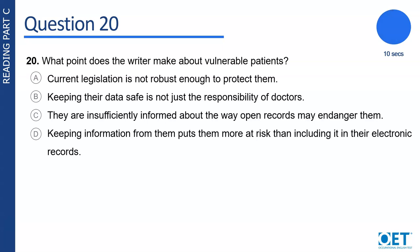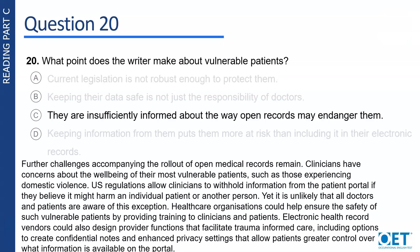Were you tempted to choose C — 'They are insufficiently informed about the way open records may endanger them'? There is evidence for this on line 4: it's unlikely that all doctors and patients are aware of this. But if we look at the previous sentence for what the exception is, we can see it is withholding information that might harm an individual patient. This means what patients are unaware of is that harmful information can be withheld, which matches the first half of option C — 'They are insufficiently informed' — but not the second half.